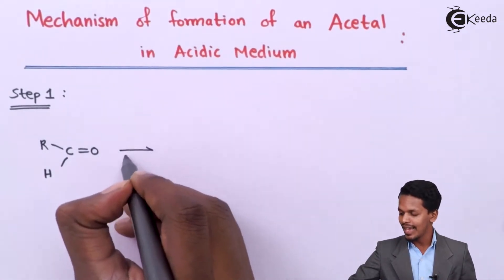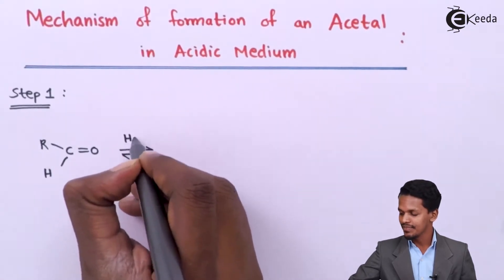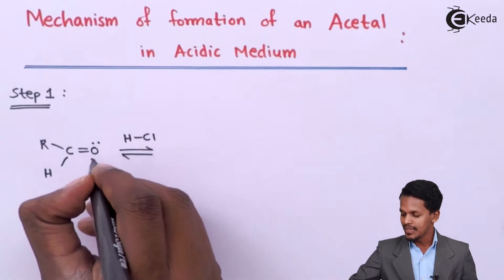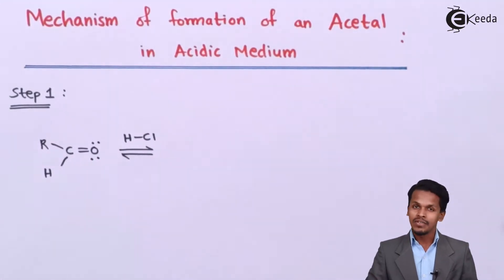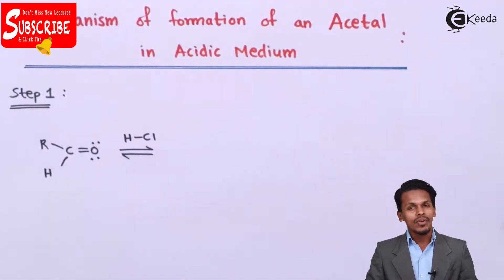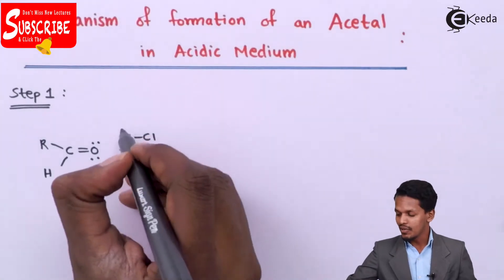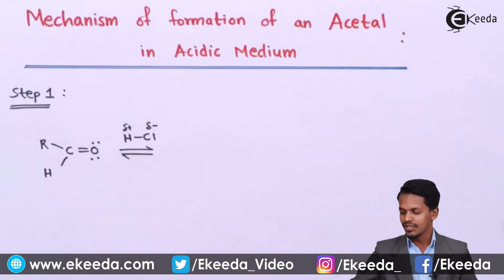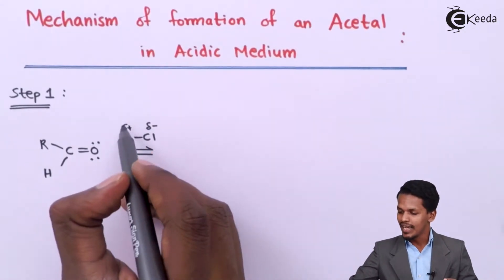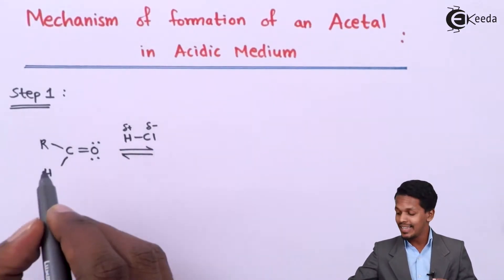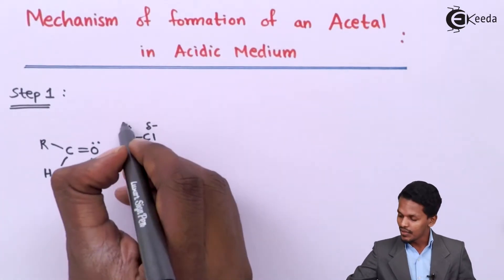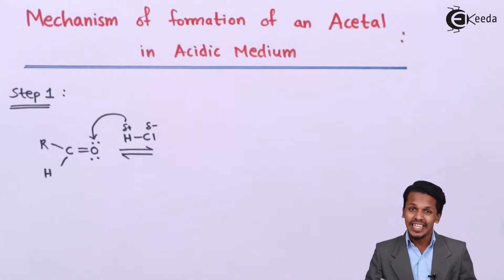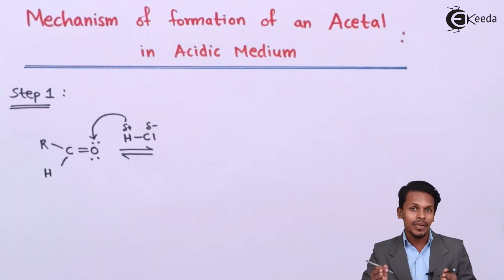We are considering an acid like HCl. We understand that oxygen has two lone pairs of electrons. The hydrogen carries a partial positive charge and chlorine carries a partial negative charge. Therefore, the hydrogen will approach the negative oxygen atom and an intermediate will be formed.